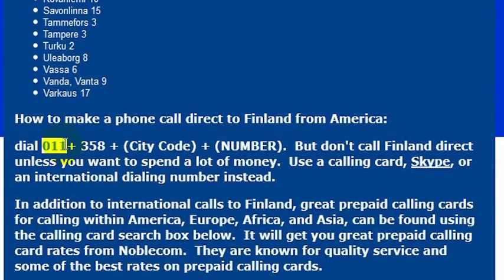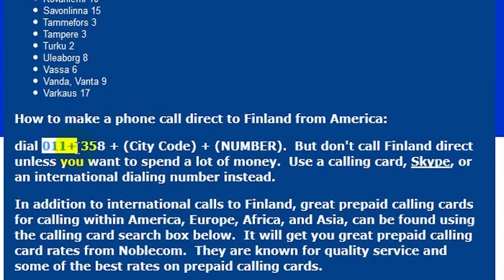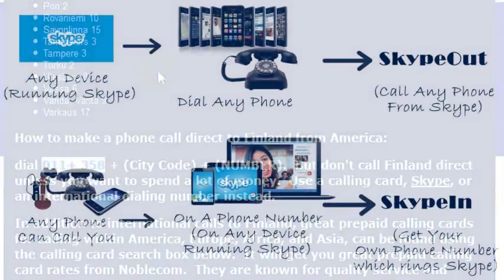If you want to dial directly to a phone number, what you would do is dial from a phone in the United States that is internationally enabled — so you'd have to have a landline or another phone that was allowed to make international phone calls. Then you would dial 011 and then 358. 358 is the country code for Finland. So you would dial 011 358 and then whatever number you were trying to reach.